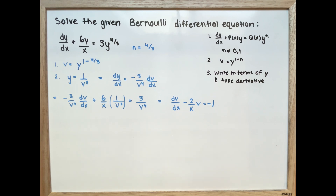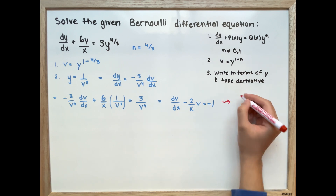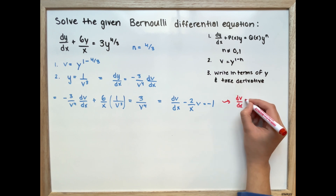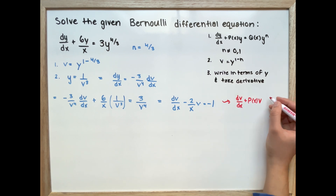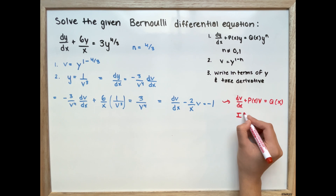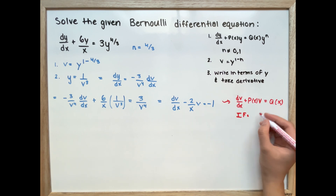Looking closely, this equation is now in the linear first-order format: dv/dx plus p(x) times v equals q(x). So to solve this, we are going to use an integrating factor.